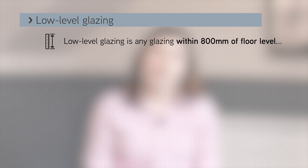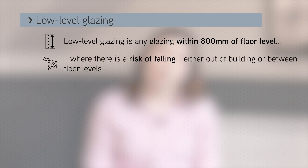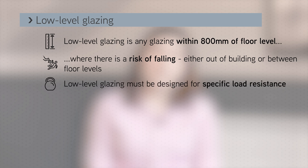The first question to answer is whether you're dealing with low-level glazing. This is any glazing within 800mm of the floor level where there is a risk of falling either out of the building or between different floor levels. Low-level glazing needs to be designed for specific load resistance.